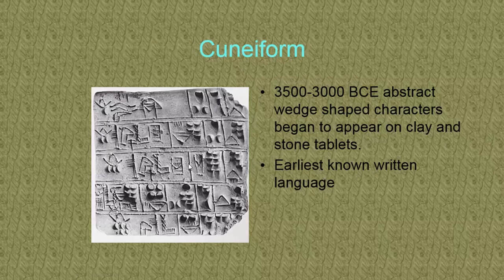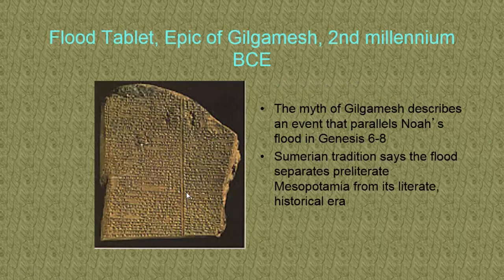I wanted you to see what cuneiform writing would look like on a tablet. This actual one is from 3500 to 3000 BCE — when they first started using it on clay and stone tablets. They made it on wax, on clay that they let harden, and if something was really permanent they'd carve it into stone. They found many tablets with all different kinds of stories. Depending on which edition of your textbook you have, the myth of Gilgamesh is printed there — and if not, find it online. It's pretty interesting and very parallel to Noah's flood in Genesis 6 to 8. The Sumerians say that the flood separates pre-literate Mesopotamia from its literate historical era.